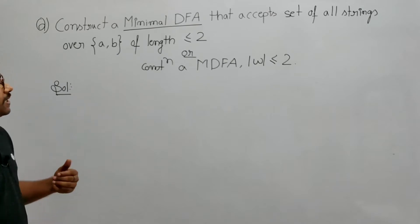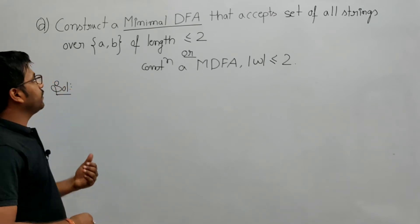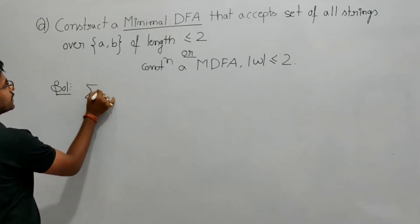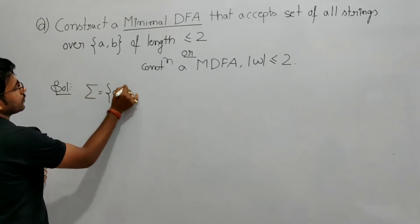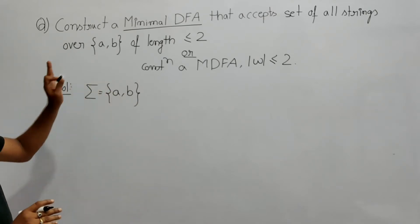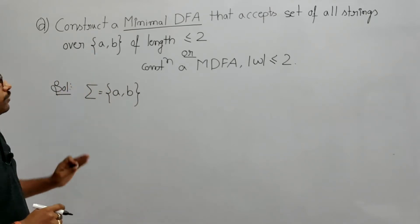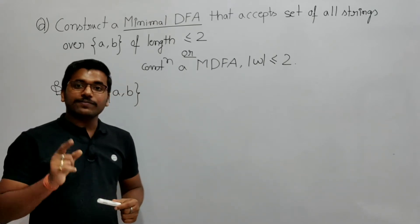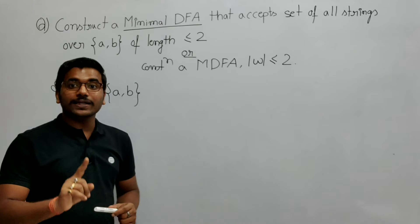Now see, it is saying to construct a minimal DFA that accepts the set of all strings over {a, b}. Here your sigma is {a, b}. So it's saying to construct a minimal DFA that accepts the set of all strings over a, b of length less than or equal to 2. Now it should accept strings whose length is smaller than or equal to 2.